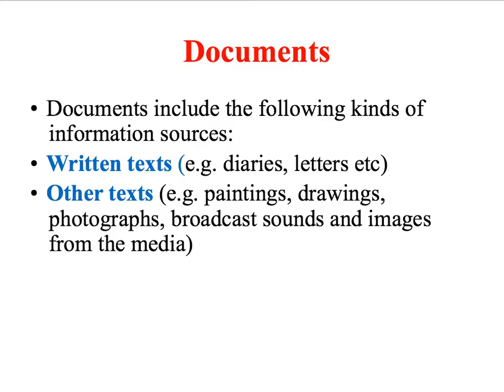Generally, we use the term 'documents' to describe the different types of qualitative secondary data that might be of interest to sociologists. Documents include, most obviously, written texts — for example, diaries and letters. But we can also use documents that take the form of other types of texts, such as paintings, drawings, photographs, as well as the broadcast sounds and images associated with documents produced by the mass media.